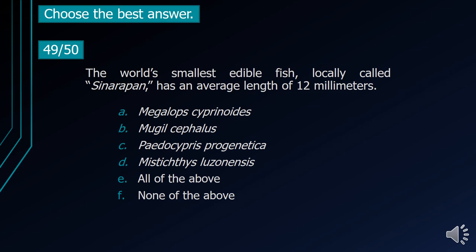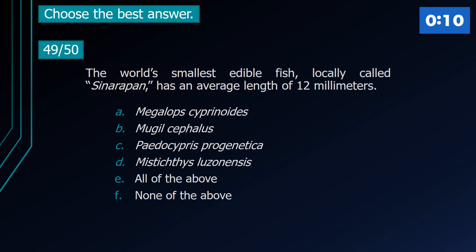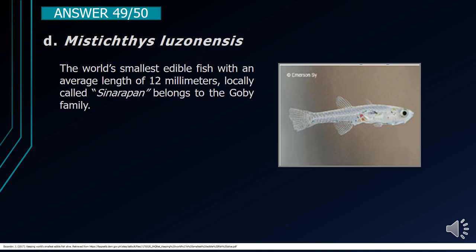Number 49. The world's smallest edible fish, locally called Sinarapan, has an average length of 12 millimeters. A. Megalops cyprinoides. B. Mugil cephalus. C. Paedocypris progenetica. D. Mystichthys luzonensis. E. All of the above. F. None of the above. The correct answer is letter D, Mystichthys luzonensis. It is the world's smallest edible fish with an average length of 12 millimeters, locally called Sinarapan, and belongs to the Goby family.